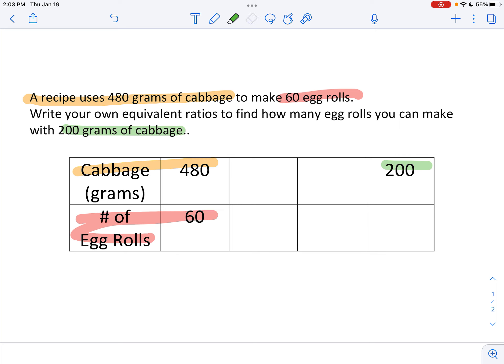So, what I am noticing is that I have numbers in the top row. So there's 480 cabbage and there's 200 cabbage. So I need to find some missing multiples or factors that can help me scale either up or down, more or less, until I get to 200.